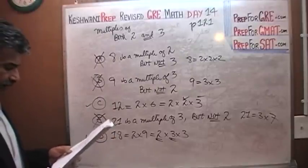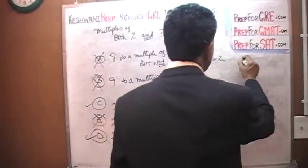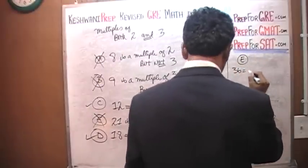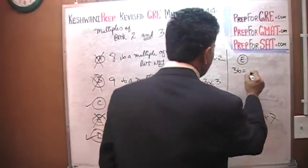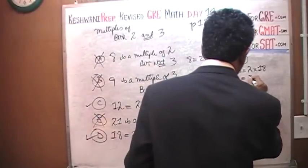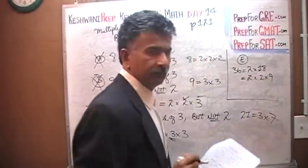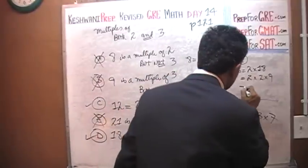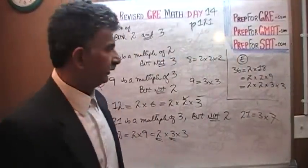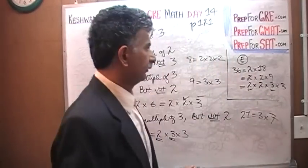And finally we have E. Let's take a look at E here. It's 36. 36 can be written as 2 times 18 which can be written as 2 times 2 times 9 which can be further written as 2 times 2 times 3 times 3. As you can clearly see, 36 is a multiple of 3 and 2. So that is the right answer.